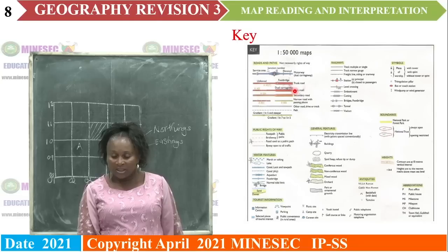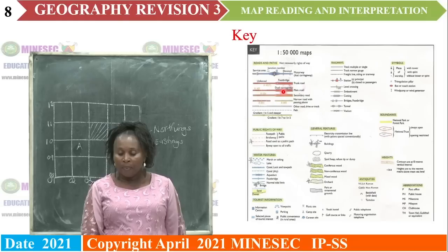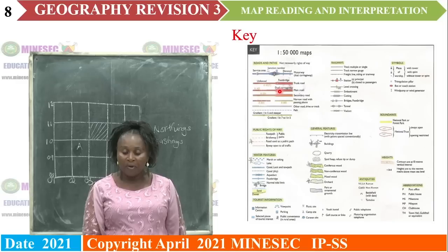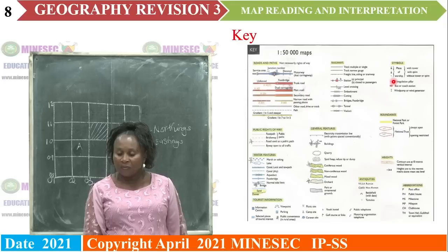Look at how this key has been arranged. Here you have roads and paths. When you go to your map, you can look at what is represented and come to the key to get the meaning of that sign or symbol. We also have railway lines, then other symbols like the cross for the church, SCH for school, then public features like food park, buildings, post office. There are many.